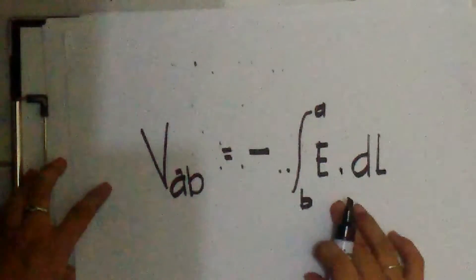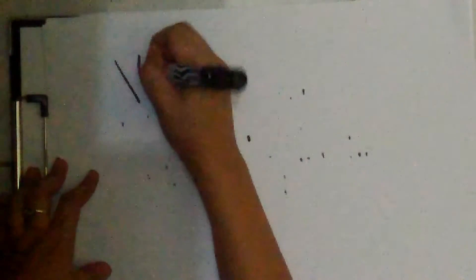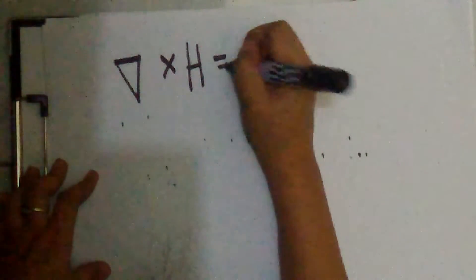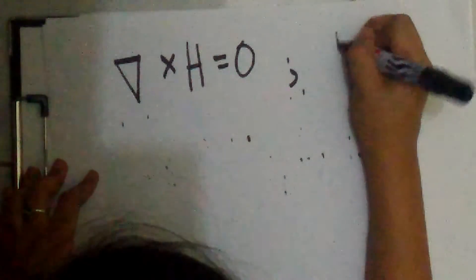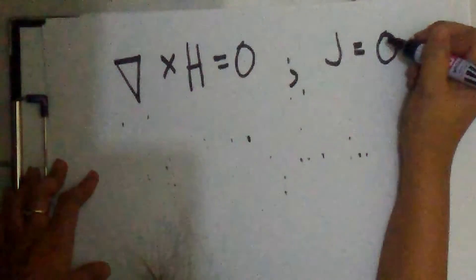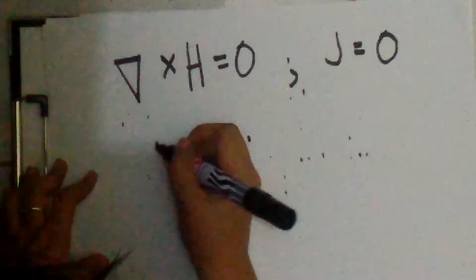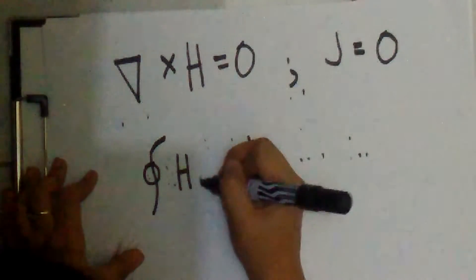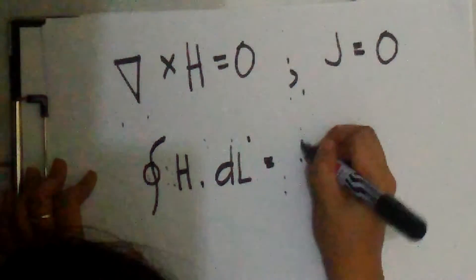It is independent of the path in the magnetostatic case. However, gradient cross product of H is equal to 0 wherever J is equal to 0. But the integration in one revolution H dot dL is equal to the current I.